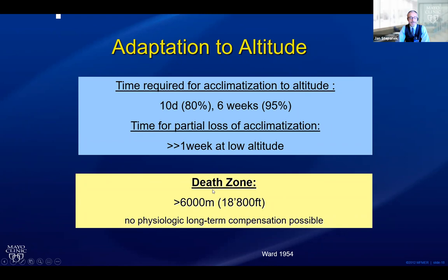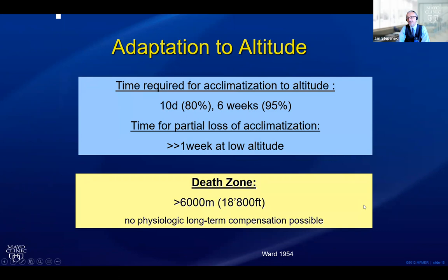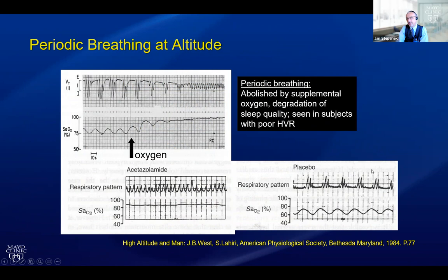The term 'death zone' refers to an elevation above which there is no physiologic long-term compensation possible. Basically, your body goes into a catabolic state — people start losing muscle, losing weight — and you cannot live well at that elevation for a prolonged period. Periodic breathing at altitude is a normal adaptation to decreased ambient pressure. You can see the periodicity of breathing in and out, and then not breathing — part of your respiratory center adapting. Giving people oxygen can abolish that; giving people acetazolamide, a carbonic anhydrase inhibitor which induces mild metabolic acidosis, will also regulate breathing and maintain oxygen saturations.